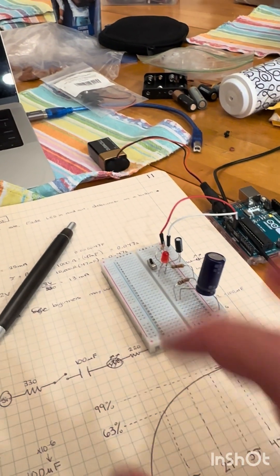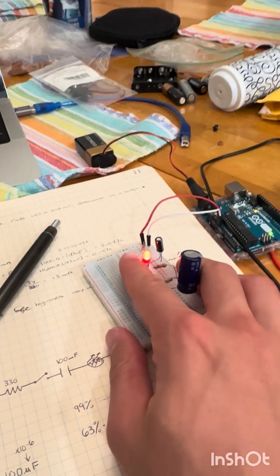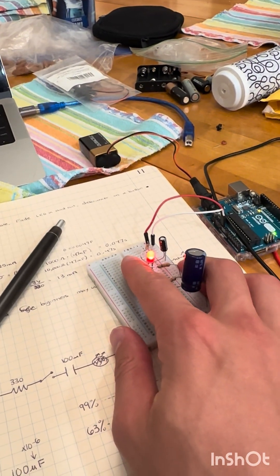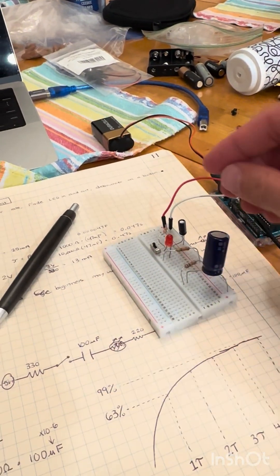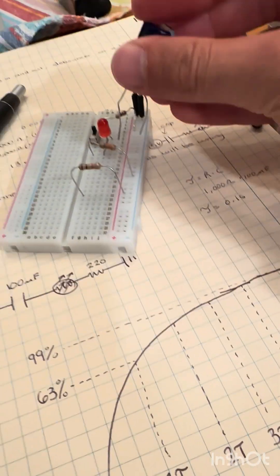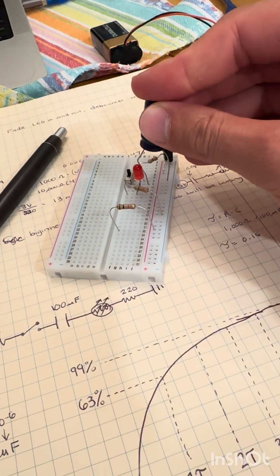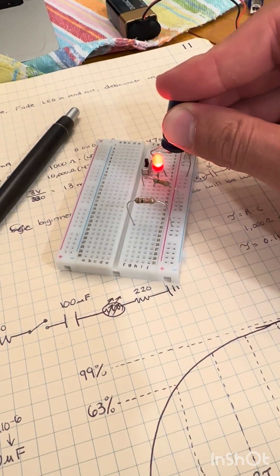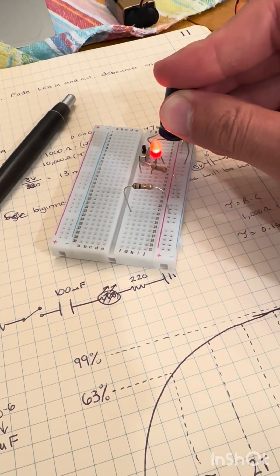And now what we should notice is when we use this bigger capacitor, because it has a bigger capacitance, it'll have a bigger time constant, so it should be able to let this LED fade out at a much slower rate. It should be 10 times longer. But surprisingly, it looks to be even longer than 10 times. This video is not slowed down.